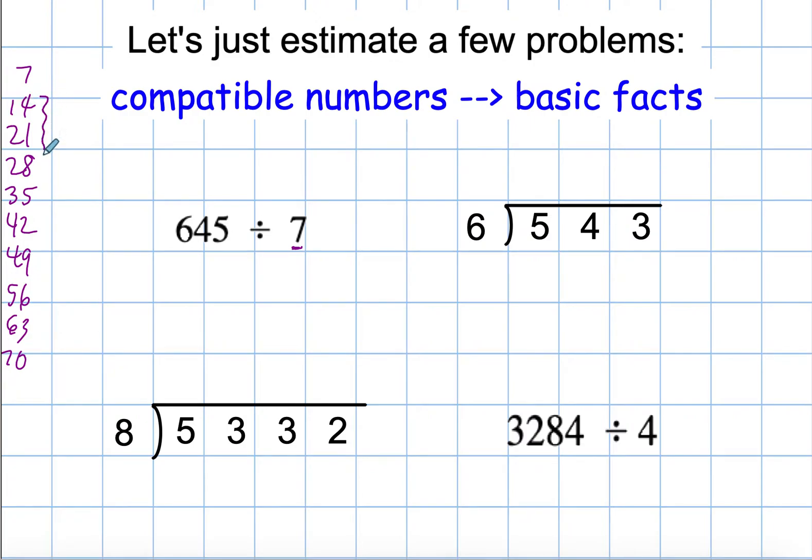Notice that most of these are two-digit numbers. So I'm going to look at the first part of my dividend, the 645. I'm just going to look at the 64. And I notice that 63 is very close to 64. So I'm going to choose 63 as my compatible number, change the 64 to a 63, and then my last digit just becomes a 0. So now I have 630 divided by 7, which is 63 divided by 7 is 9, and then I have that 0.